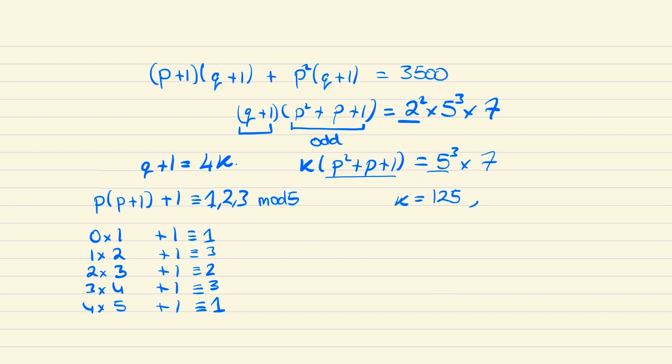And so q, which is 4k-1, is 499. This also tells us then that p²+p+1 is equal to 7, and so p equals 2. And hence M, which was p² times q, will be 1996. And so we're done.